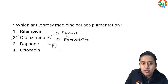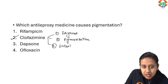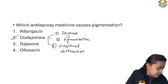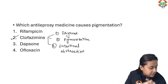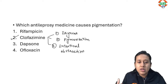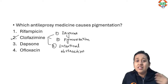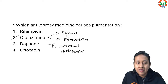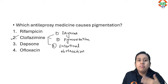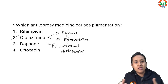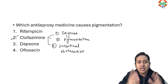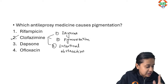The third side effect of clofazimine is intestinal obstruction. So the anti-leprosy medication which causes pigmentation is clofazimine. Regarding other drugs: rifampicin mainly causes reddish discolouration of body fluids and affects the liver, so LFT must be done before starting rifampicin. Dapsone is known to cause drug reaction and methemoglobinemia. The pigmentation is only seen with clofazimine — that is very classical in a leprosy patient. The answer to this question is option number two.